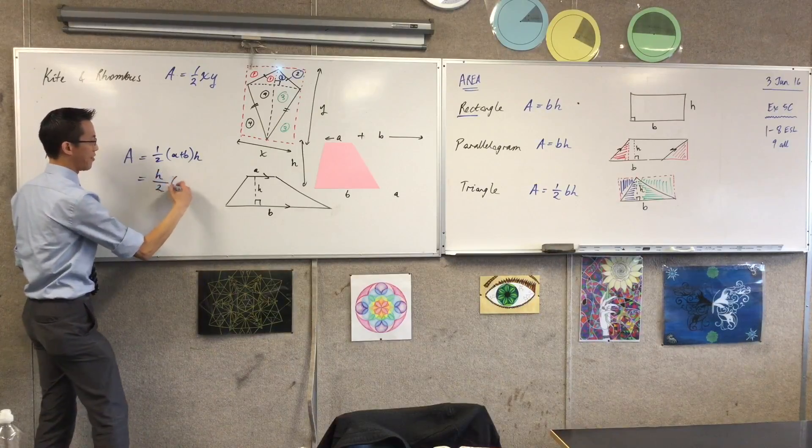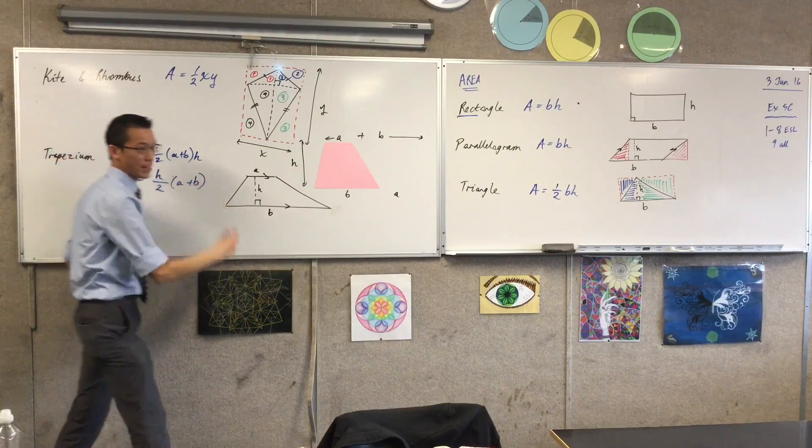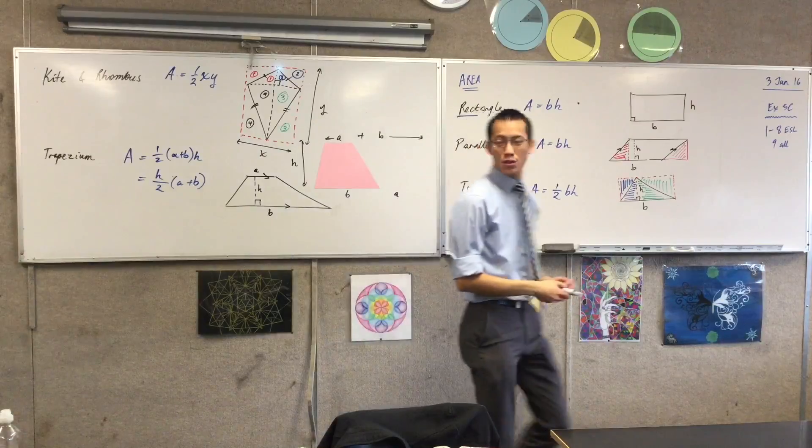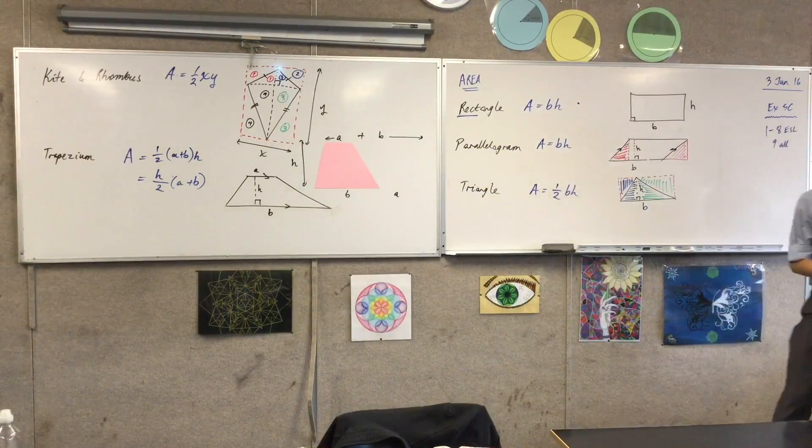So just to make it a tiny bit neater, we tend to write it with the h and the half sort of spun together in the middle. So, sorry, at the start, rather.